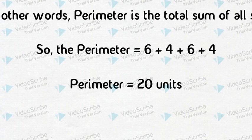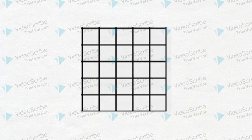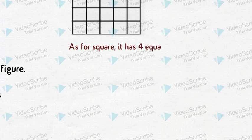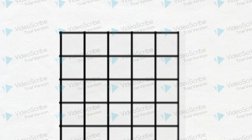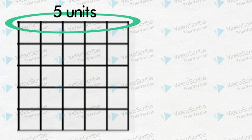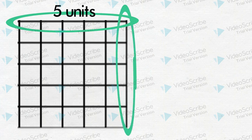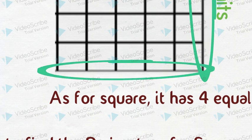Alhamdulillah. Now let's move on to find the perimeter of a square. Consider this square. A square has 4 equal sides, so to find the perimeter of a square, we just need to multiply the side length by 4.